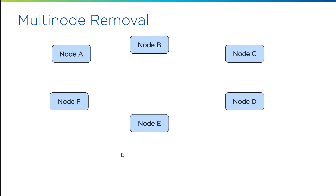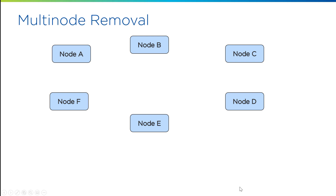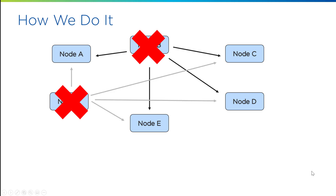So here we have a six-node cluster. There are no UI changes for this feature — you'll just be able to mark nodes one at a time. Node B gets marked, then you mark node F, and they will start replicating copies of their data to the remaining nodes. We're not going to send any data to the nodes that are marked, which speeds up the process and makes sure we're not copying data multiple times. Node B is not going to send any data to F, and F is not going to send any data to node B.